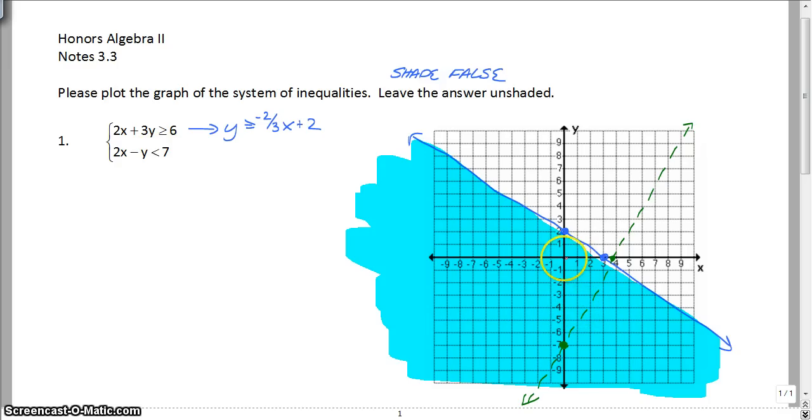So, this is less, you would assume below. Remember, I always say test 0, 0 if possible. So, 0 minus 0 is less than 7. That is true. So, we would be shading in this direction. Even though this looks, it says less, you would assume you are shading below. But this is true.